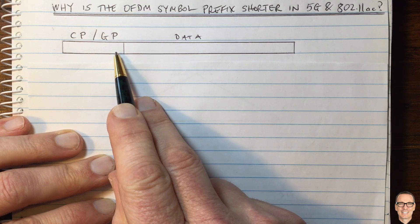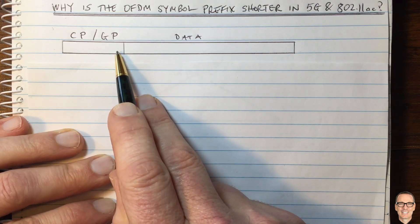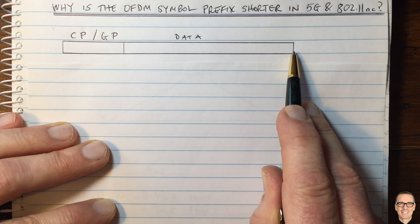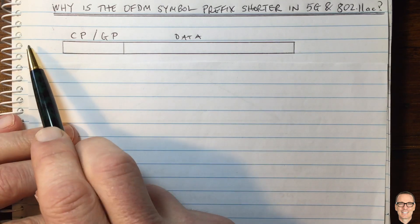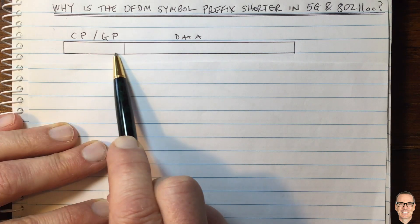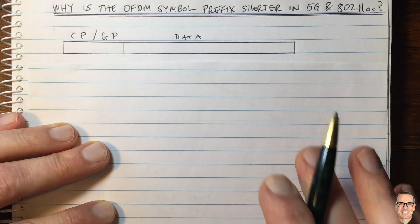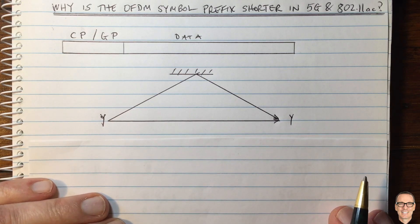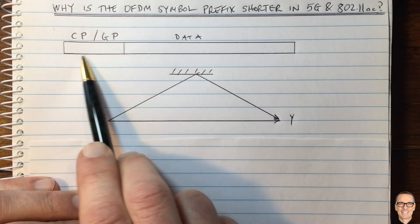Let's think about this prefix. The reason for having the prefix is to protect the data portion of the symbol from the inter-symbol interference from the previous data symbol. The prefix needs to be long enough to account for the multipath reflections in the channel, which determines this distance.